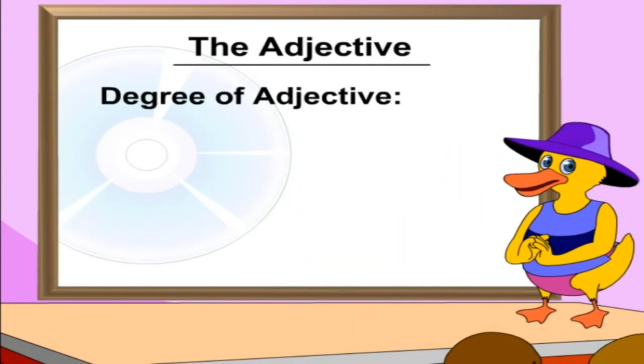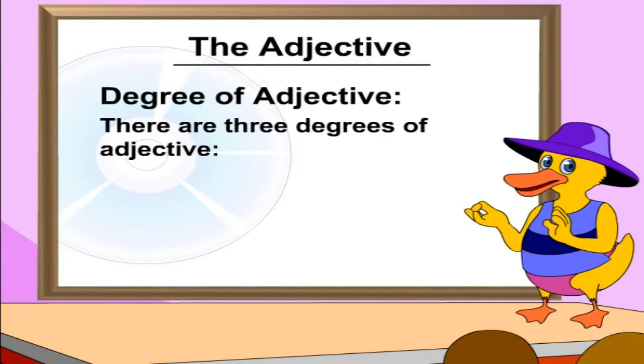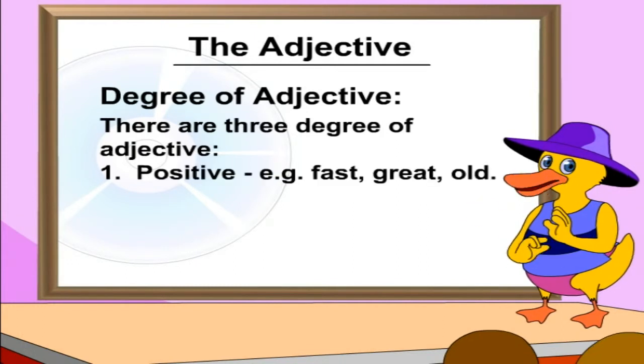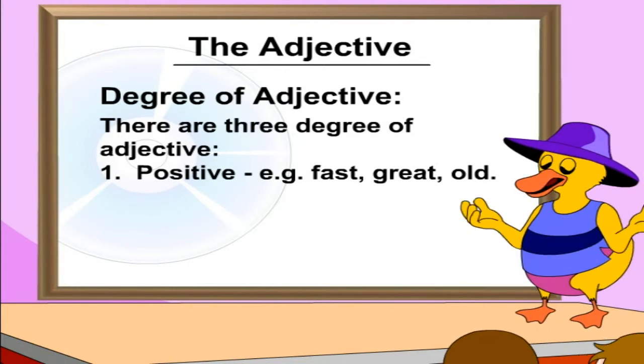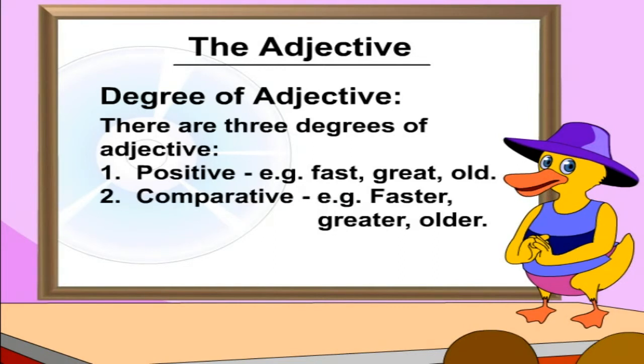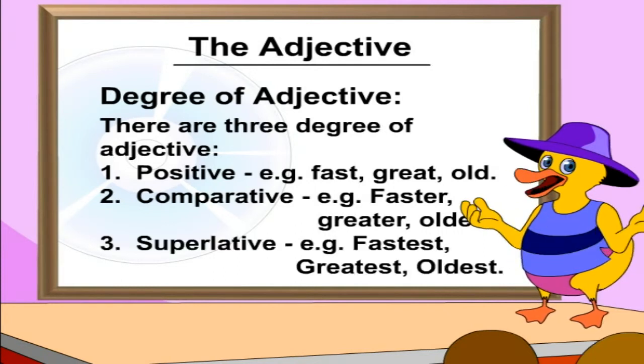Degree of Adjective. There are three degrees of adjectives. 1. Positive, for example: fast, great, old. 2. Comparative, for example: faster, greater, older. 3. Superlative, for example: fastest, greatest, oldest.